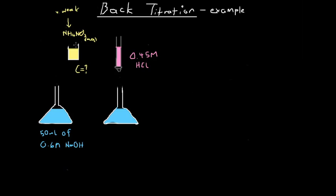I've got this solution of ammonium nitrate with an unknown concentration, and I want to find out its concentration. What I do is pour 10 millilitres into a flask containing 50 mils of 0.6 molar sodium hydroxide. I know that this sodium hydroxide is in excess — I have a rough idea of the concentration of ammonium nitrate from the beginning, so I've chosen these volumes knowing the NaOH is in excess. The ammonium nitrate reacts with sodium hydroxide until all the ammonium nitrate is gone, leaving some sodium hydroxide remaining.